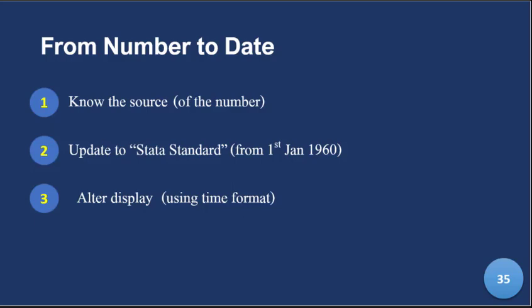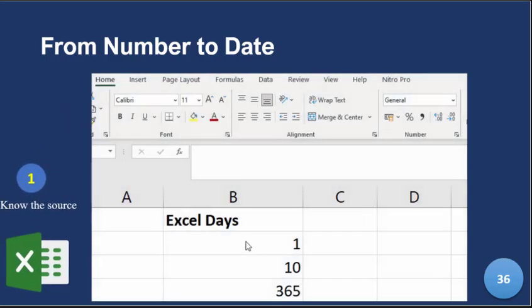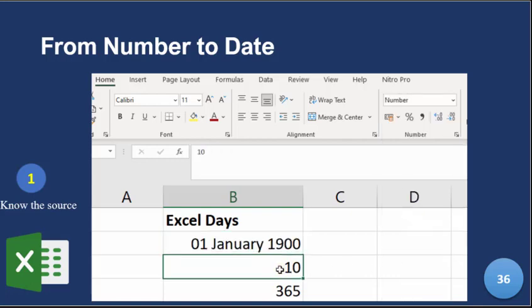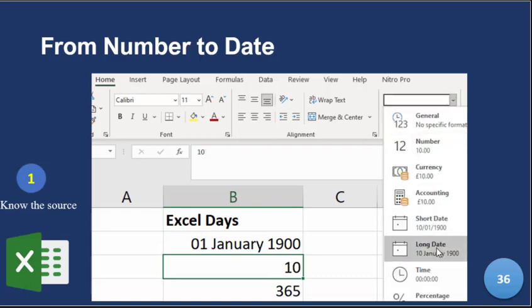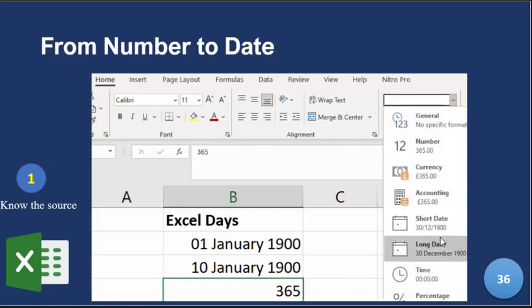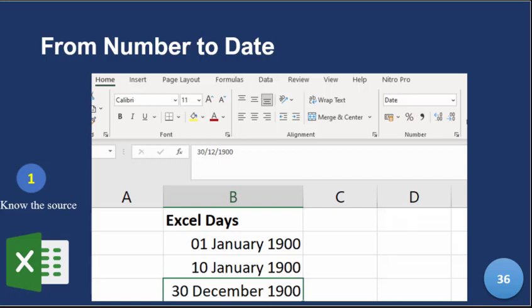When you know the source, you update to what we call the Stata standard — that is very key. Then you alter the display using the time formatting commands. Now, if the data is in Excel, you need to know the source: Excel references from 1900, Stata references from 1960. Please note there is a 60-year gap, so if data is coming from Excel, there is a specific way you have to go about it.